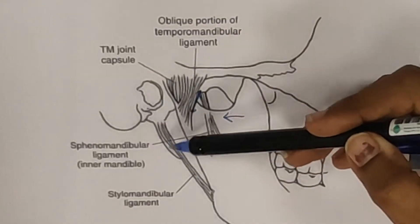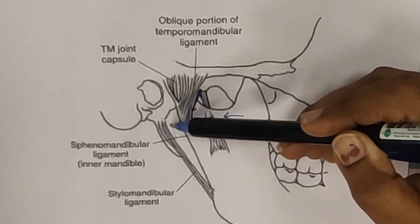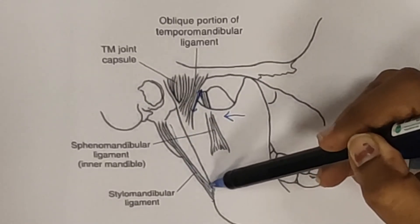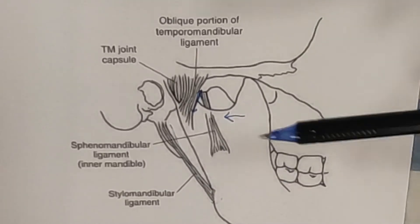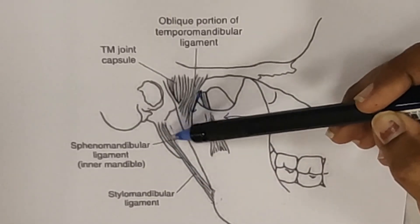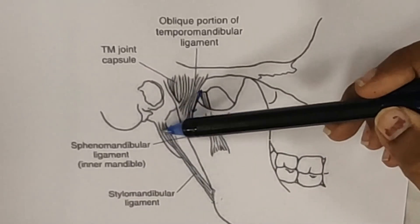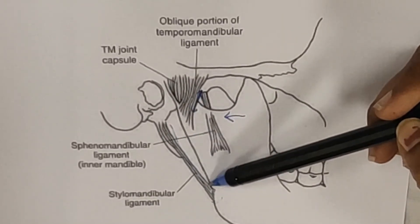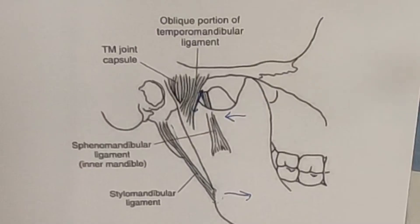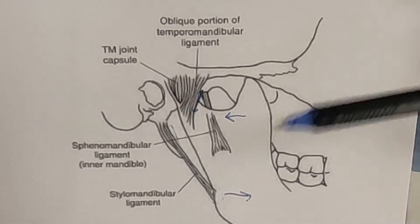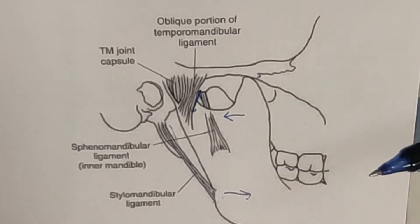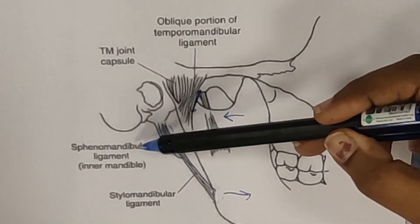Additionally, you have the stylomandibular ligament. It basically arises from the styloid process and is attached just superior to the angle of the mandible. If you look at the direction of this ligament, you can see that it checks excessive anterior movement of the mandible, which is one of the most common movements that happens during mouth opening.